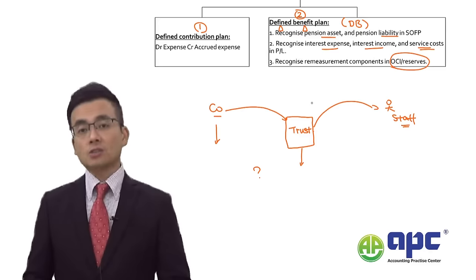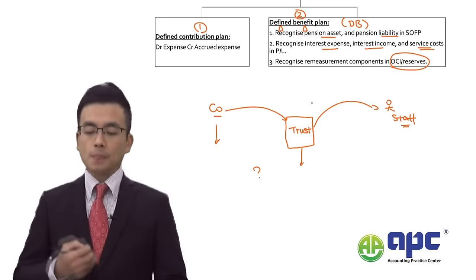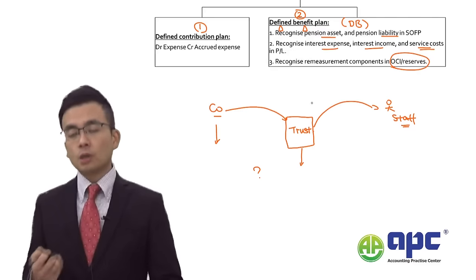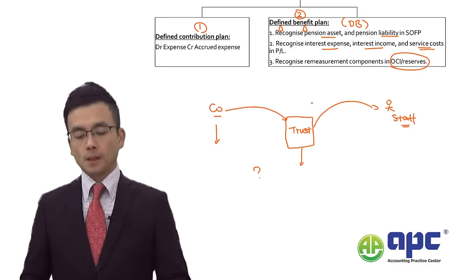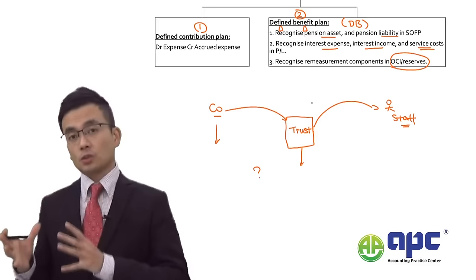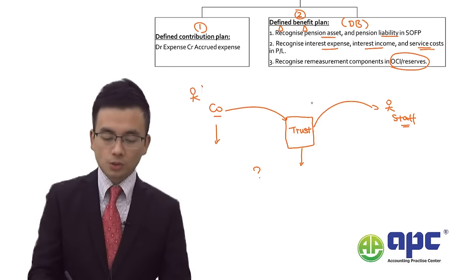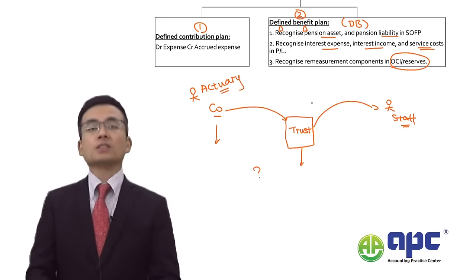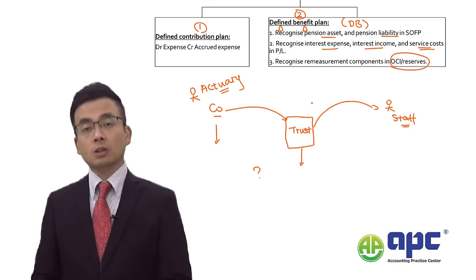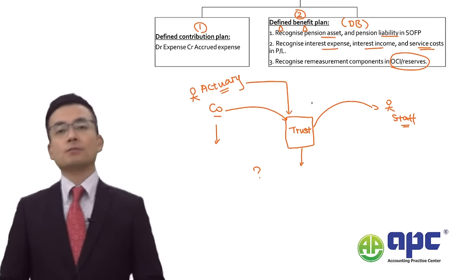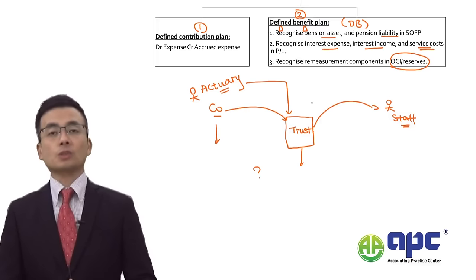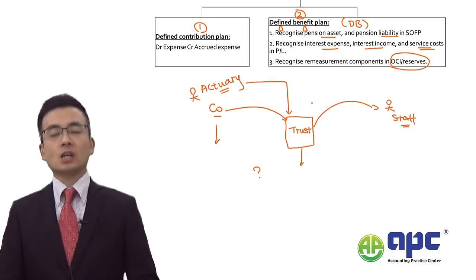Actuarial gains and losses arise because in the DB scheme, the company promises staff a specific retirement amount. The company transfers money to the trust company and employs an actuary to calculate asset and liability values from the trust company's perspective — which then become the pension asset and liability amounts in the company's Statement of Financial Position.